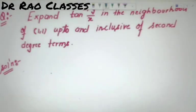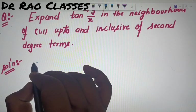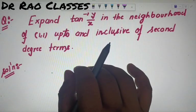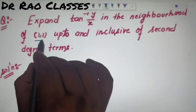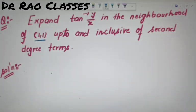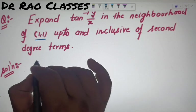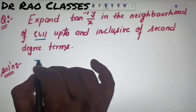Taylor series expansion की हम बात करते हैं। Taylor series का formula हमें पता होना चाहिए। इसको in the neighborhood around a non-zero point expand करना है — यह Maclaurin's का काम नहीं, Taylor's का काम है। Including up to and inclusive of second degree term तक लेकर चलना है, exclude नहीं करना है।